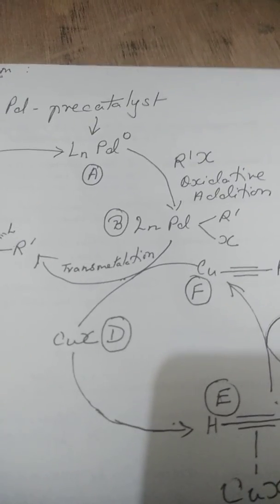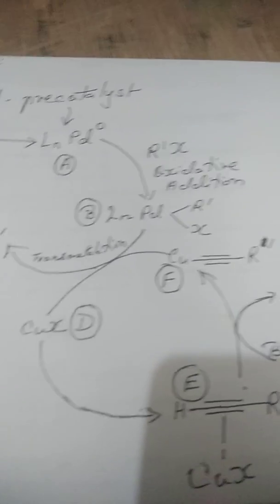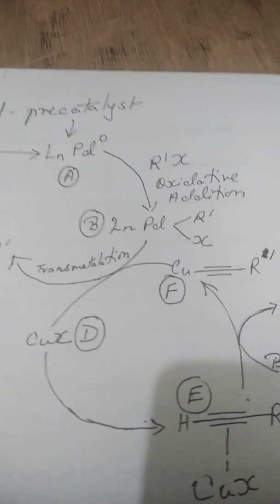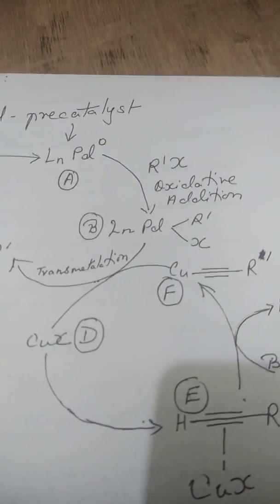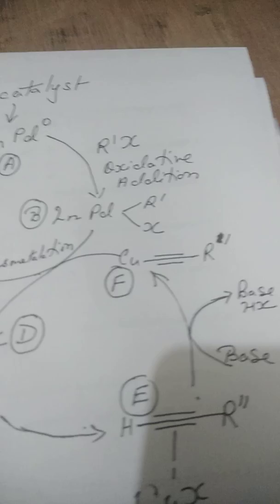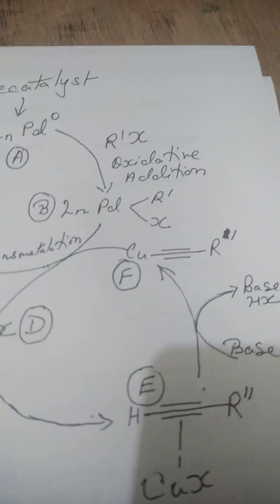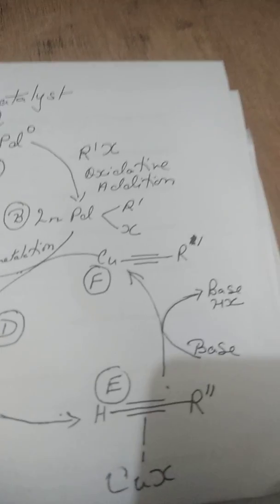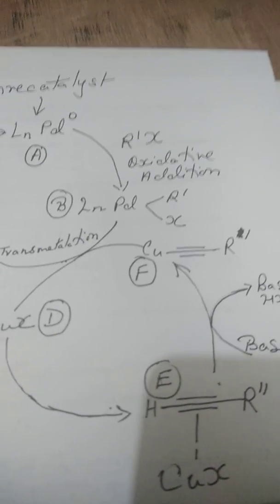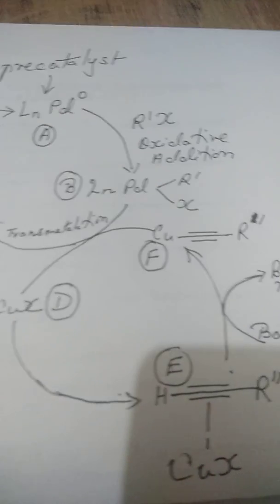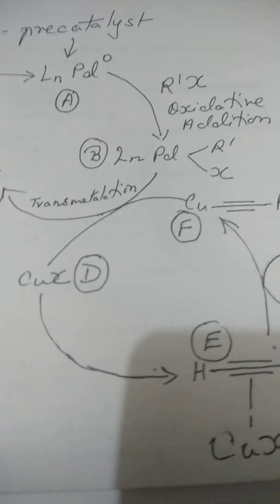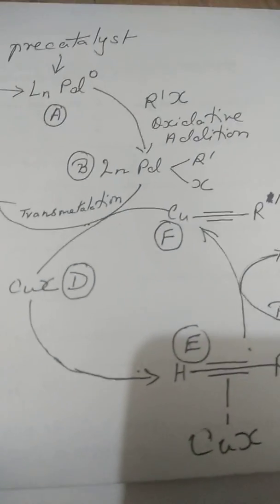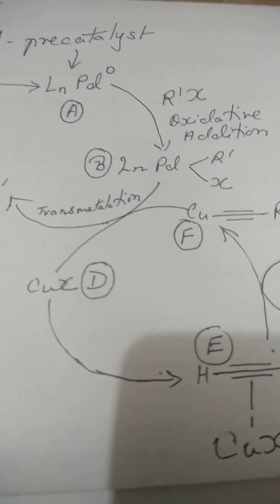And this on deprotonation, so H with Cu-X will form HX. In other words, as the medium becomes acidic, it is neutralized by the base which is present. The base can be diethylamine, triethylamine, it can be ether, it can be dimethylformamide. And we get this F, the product F, that is the copper acetylide.